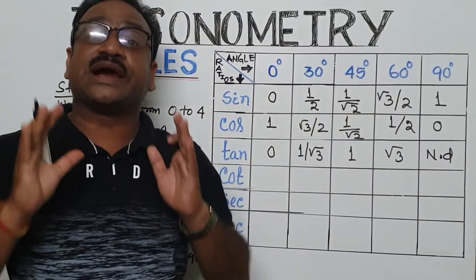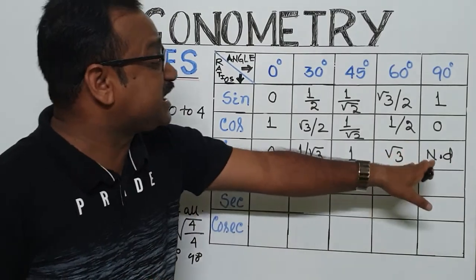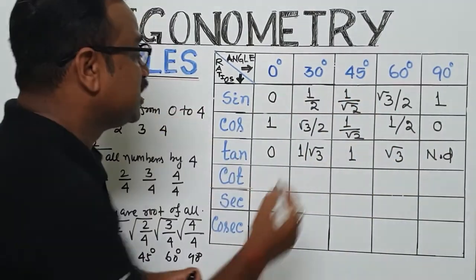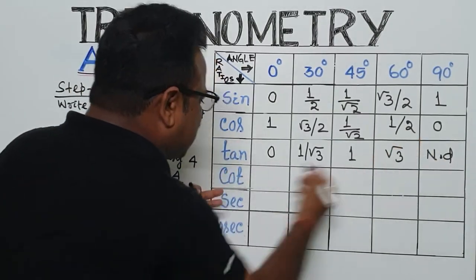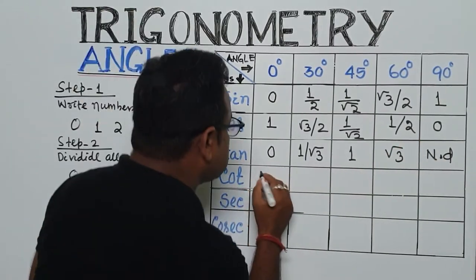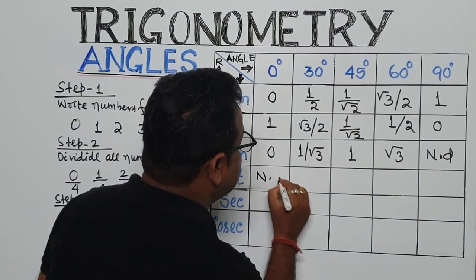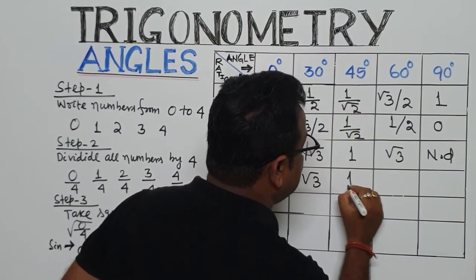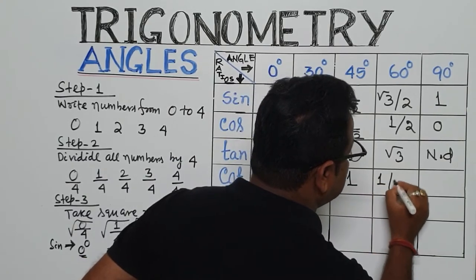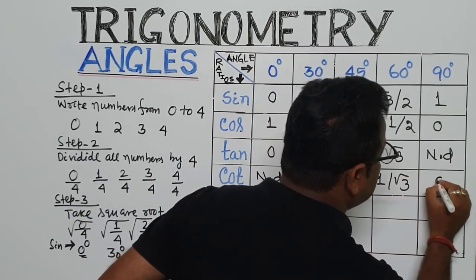And 1 by 0 is not defined, because 1 by 0, we cannot find the value. That I am writing ND, not defined. So, when we are going to find out the angle of cot, write the tan in the reverse order. So first, I am writing here ND, then here root 3, then 1, then 1 by root 3, then here 0.